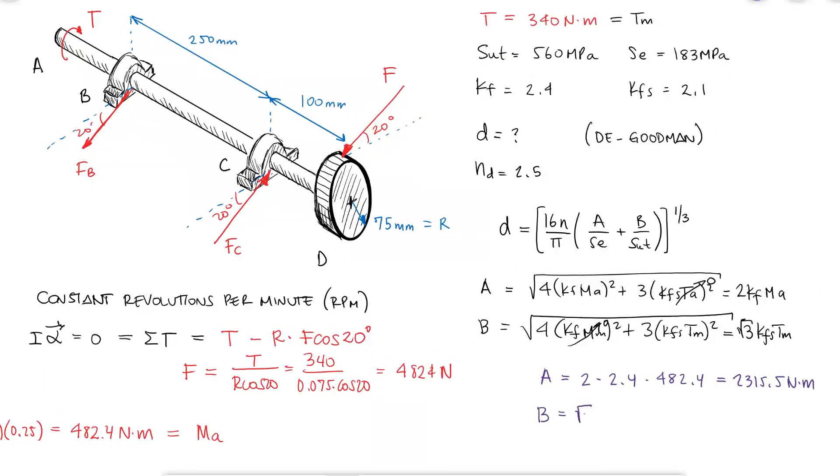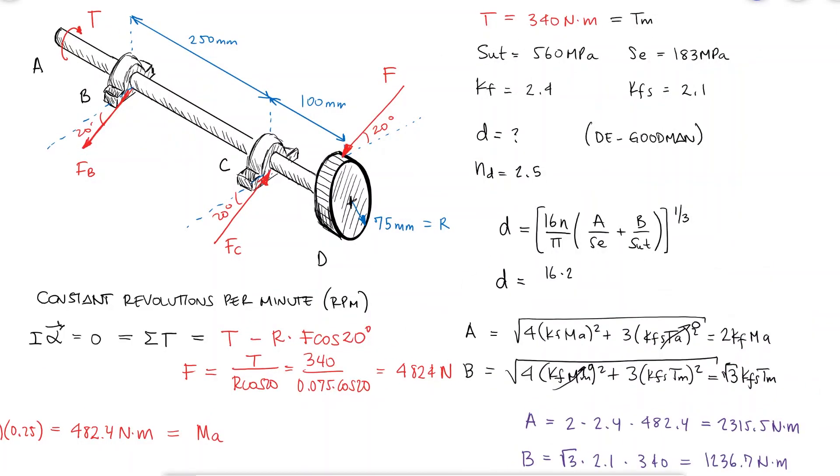With the A and B coefficient values, we can now substitute to find the diameter of the shaft. For one more quick example, make sure to check out the link in the description below.